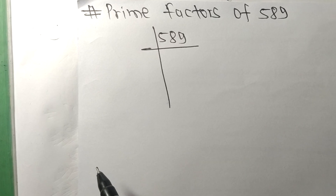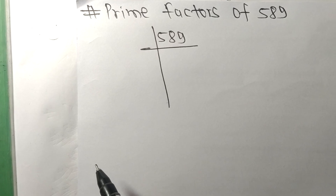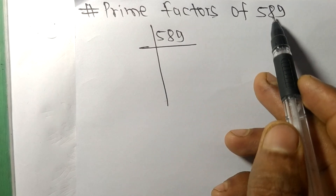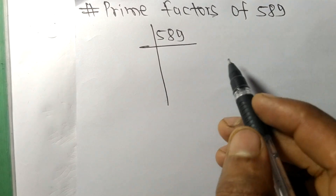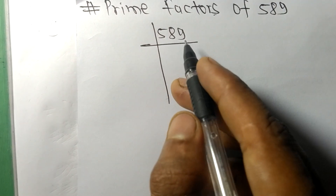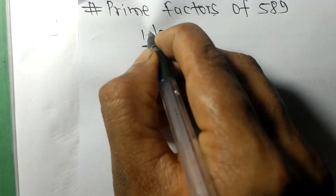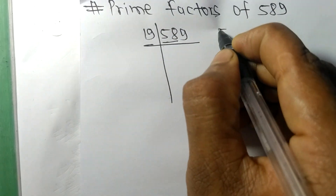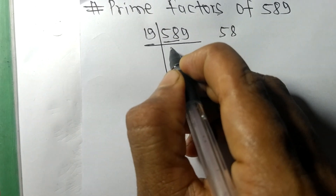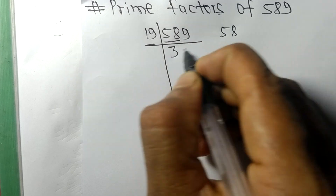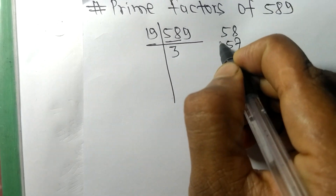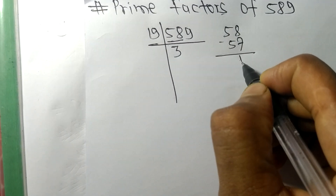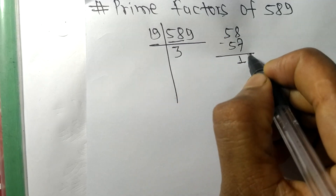Today in this video we shall learn to find the prime factors of 589. So 589 is exactly divisible by 19. Here, 19 times 3 equals 57, and we get a remainder of 1, bringing down the 9.